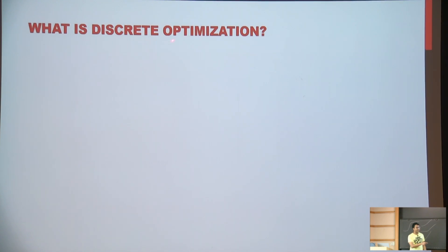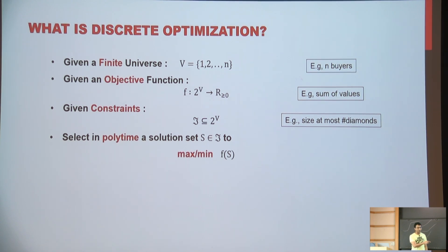Let's start off with what's discrete optimization. This is when there's no uncertainty. The usual setting is there's a finite universe. So imagine n, which is the number of your buyers. There's an objective function, which could be the sum of your values, like some linear function, but in general, it's a function from a subset to any non-negative reals.